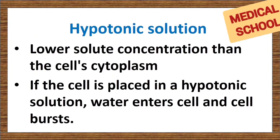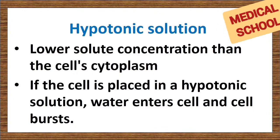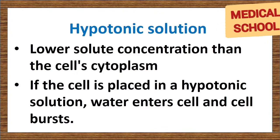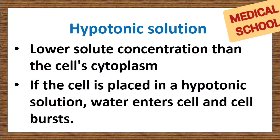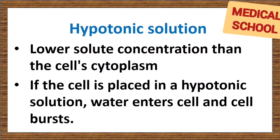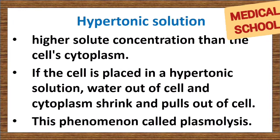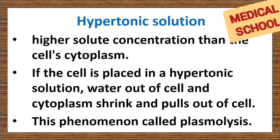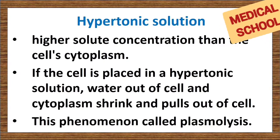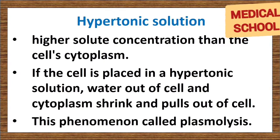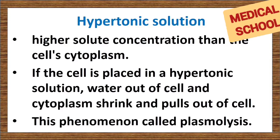A hypotonic solution is one that has a lower solute concentration than the cell's cytoplasm. If a cell is placed in a hypotonic solution, water enters the cell and the cell bursts. A hypertonic solution is one that has a higher solute concentration than the cell's cytoplasm. If the cell is placed in a hypertonic solution, water moves out of the cell and the cytoplasm shrinks and pulls away from the cell wall. This phenomenon is called plasmolysis.